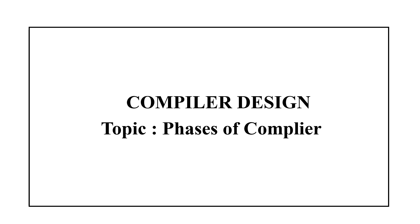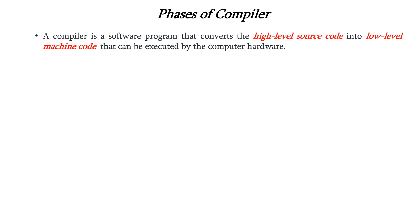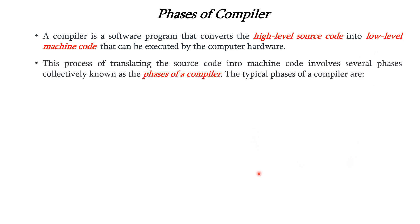Hello everyone. In this lecture we are going to see about the topic phases of compiler in compiler design. From our previous lecture we know that a compiler is a software program that converts the high level source code into low level machine code that can be executed by the computer hardware. This process of translating the source code into machine code involves several phases which are collectively known as phases of compiler.